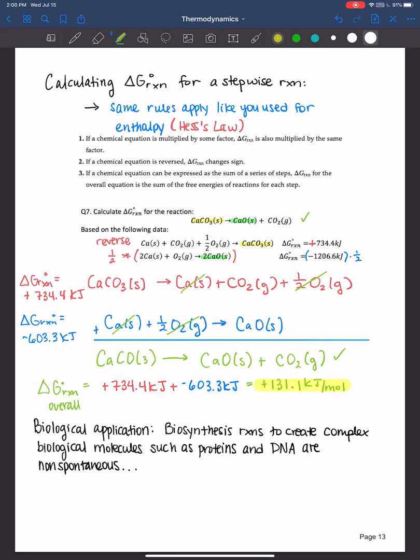From here we've determined that the decomposition of calcium carbonate - CaCO3 solid - is it spontaneous or non-spontaneous? It's a positive delta G, so definitely non-spontaneous.